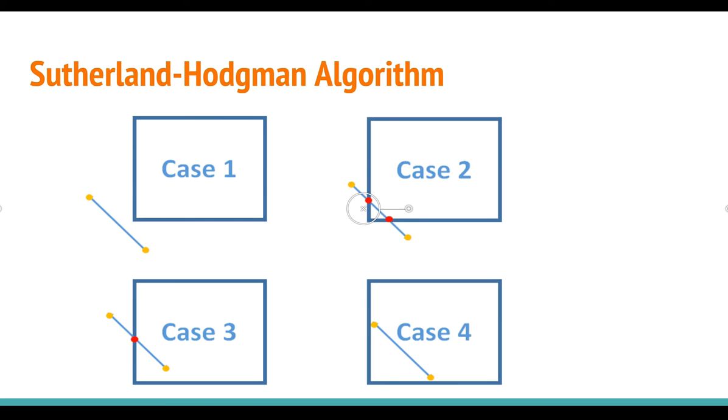The fourth case is that both vertices are inside of the cutting frame. In this case, we keep them both.